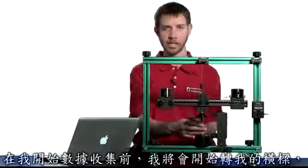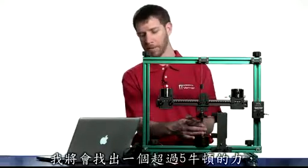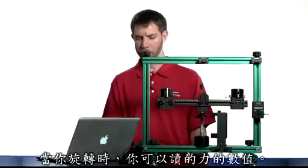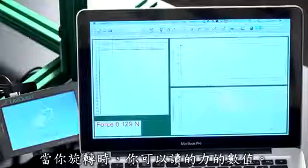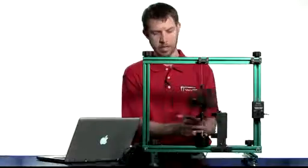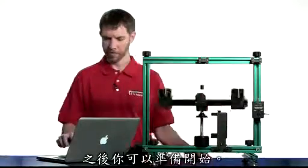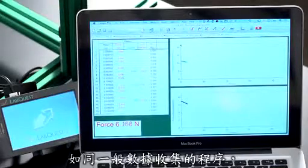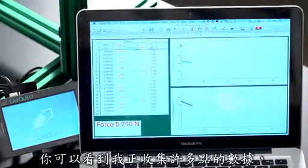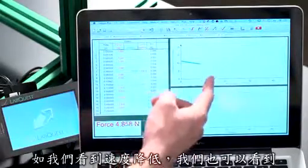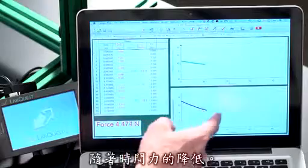Before I begin data collection, I'm going to spin the beam. And I'm going to aim for a force over five newtons. You can read the force while you're spinning. And then you're ready to start. As data collection proceeds, you can see I'm collecting a lot of points of data. As we watch the velocity decrease, we can also see that the force is decreasing over time.